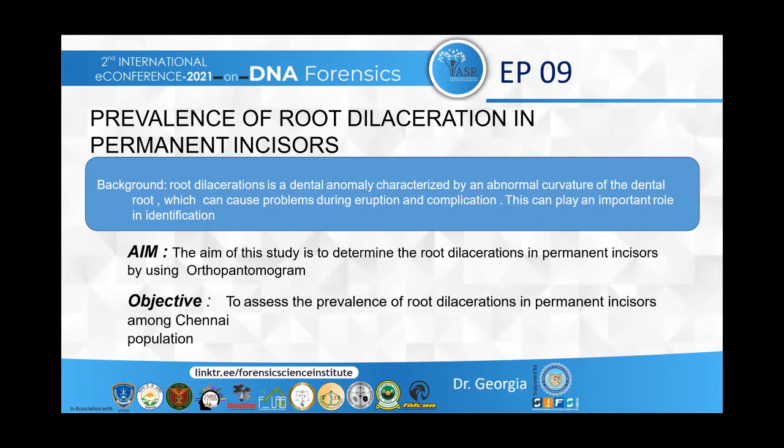Coming to the background of the study, root dilaceration is a dental anomaly characterized by an abnormal curvature of the dental root, which can cause problems during eruption and complications. This can play a very important role in identification. The main aim of my study is to determine root dilaceration in permanent incisors by using an orthopantomogram. The objective is to assess the prevalence of root dilaceration in permanent incisors among the Chennai population.